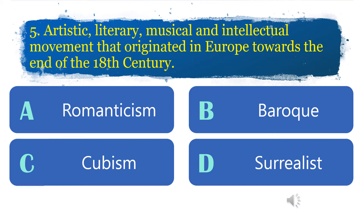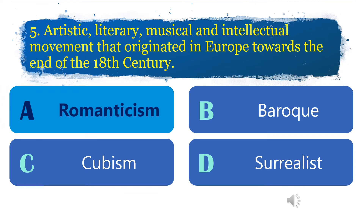Number 5: Artistic, literary, musical, and intellectual movement that originated in Europe towards the end of the 18th century. A. Romanticism. B. Baroque. C. Cubism. D. Surrealist. The answer is letter A.